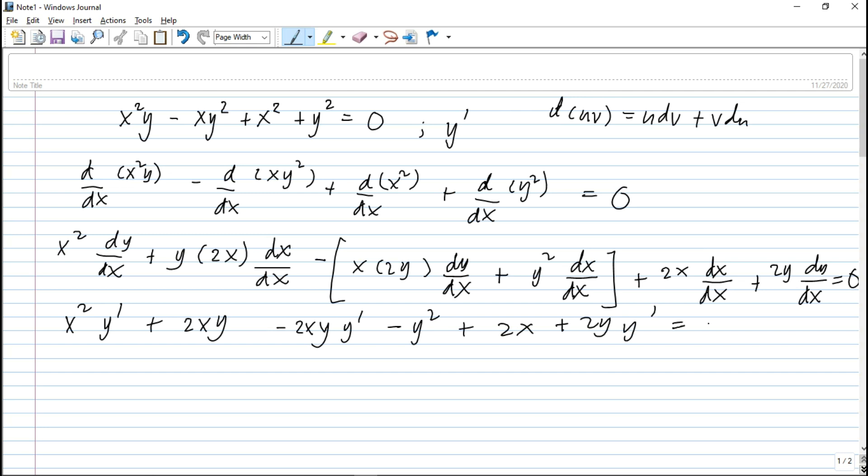then plus 2y, y prime. And you just extract y prime. So, this is x squared y prime minus 2xy, y prime. So, we just regroup this, so plus 2y, y prime here. Then, that is plus 2xy. Then, minus y squared plus 2x is equal to 0.